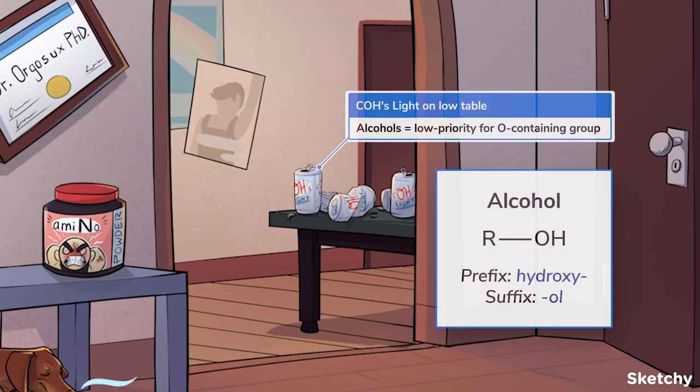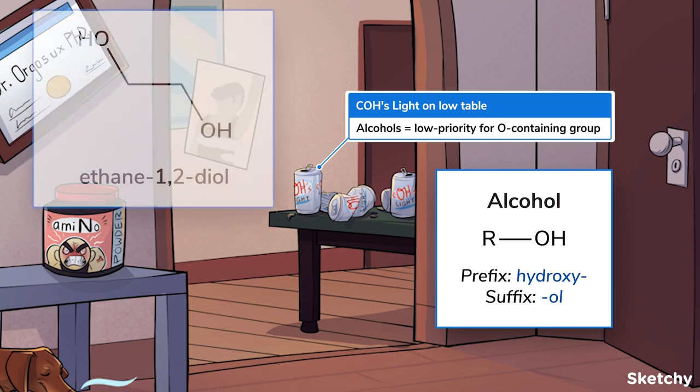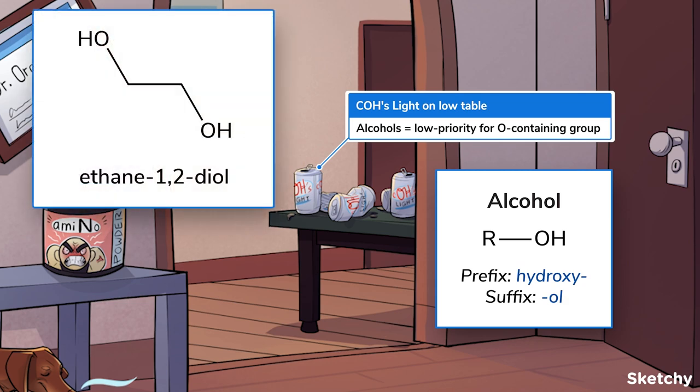Ah, so that's why the floor is so sticky. Alcohols are organic molecules with an OH group, and we've represented them with these cans of COS-Lite on this table in the back room. Alcohols get named with the hydroxy prefix if they're not the highest priority group in the structure, or the -ol suffix, O-L, when they are. Structures with two alcohol groups are referred to as diols, or glycols.